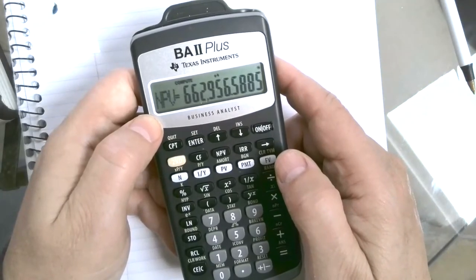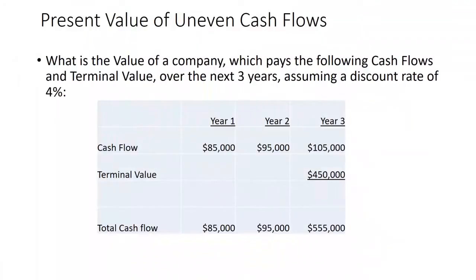If you look at the problem itself, it makes sense — the present value is going to be a number that's less than the sum of those three cash flows at the bottom, because we're discounting those back to the present, each one at 4%. I could have discounted each one back separately at 4% and then summed the three, and I should get the same number — $662,000 and change.